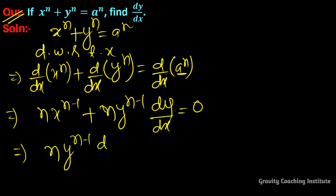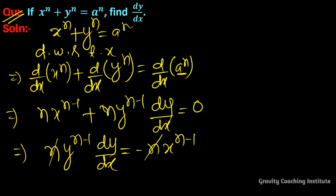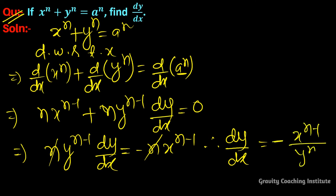So ny to the power n minus 1 times dy/dx equals minus nx to the power n minus 1. The n cancels, therefore dy/dx equals minus x to the power n minus 1 upon y to the power n minus 1, which equals minus x upon y to the power n minus 1. Answer.